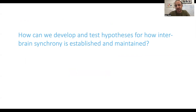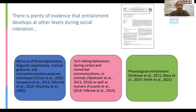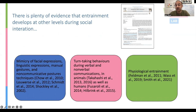Now just really quickly in the last part of the talk, I'm going to talk about some things that dual EEG can tell us. I've just finished a review with Martin James and PhDs in my lab, looking at entrainment at other levels during social interaction. We know there's lots of evidence that behavioural entrainment develops: mimicry of facial expressions, linguistic expressions, manual gestures, non-communicative postures, and so on. Loads of evidence for turn-taking during verbal and nonverbal communication, and some evidence for physiological entrainment as well.